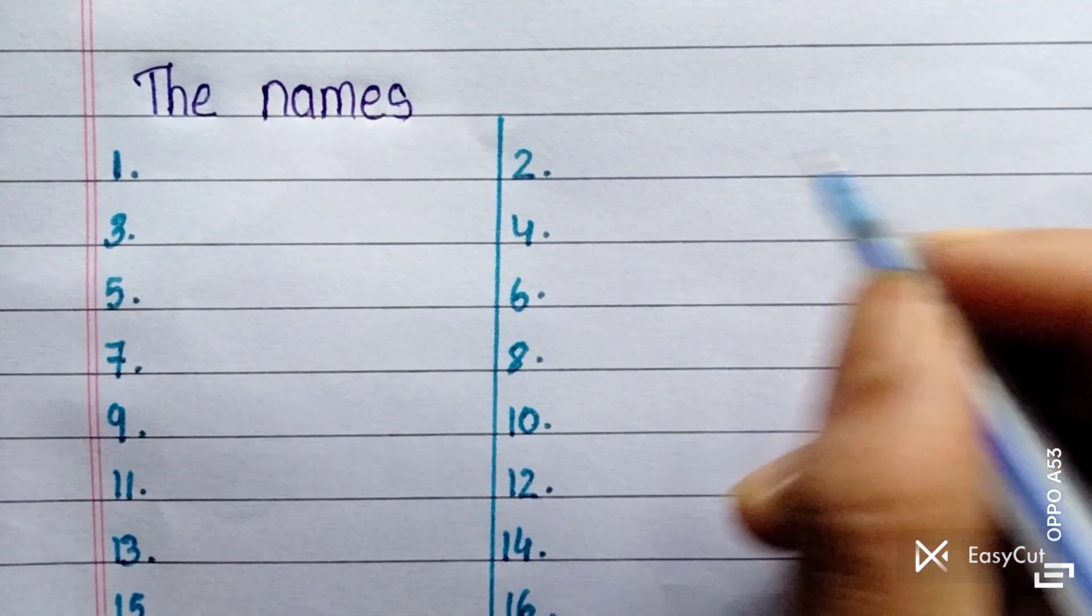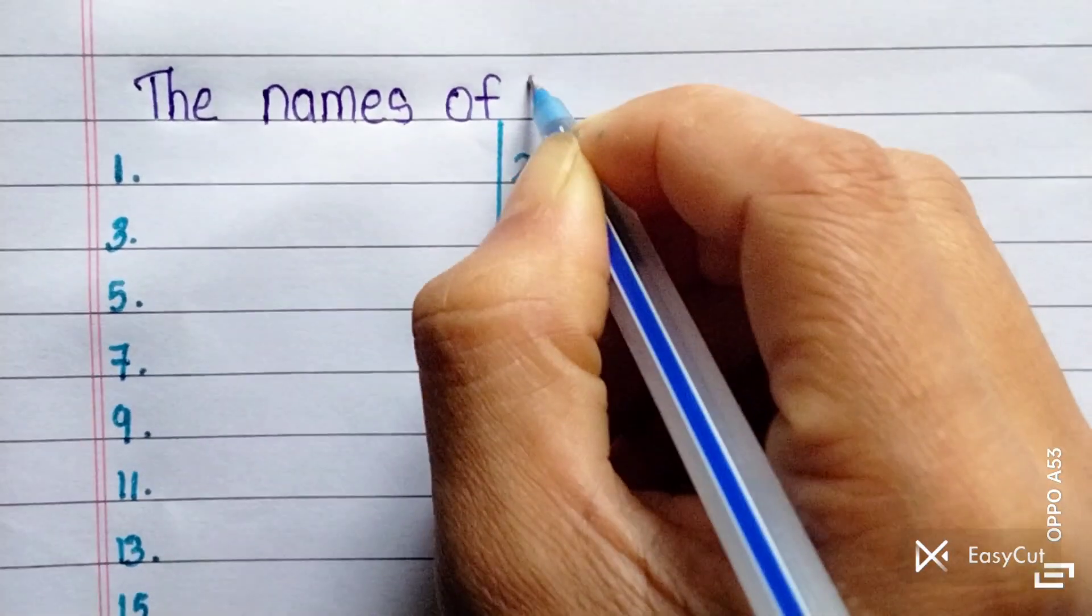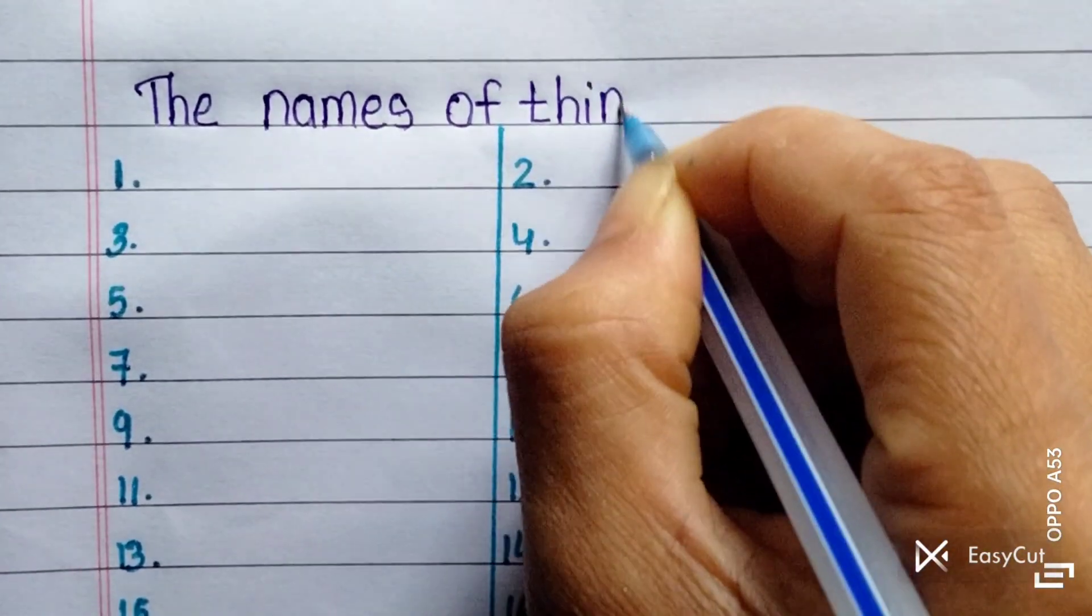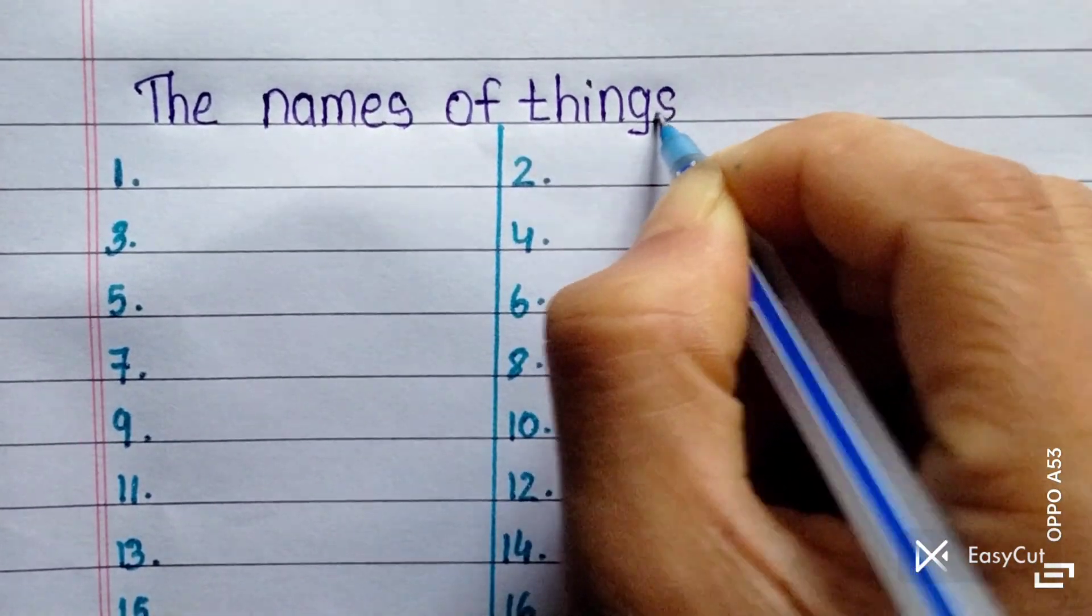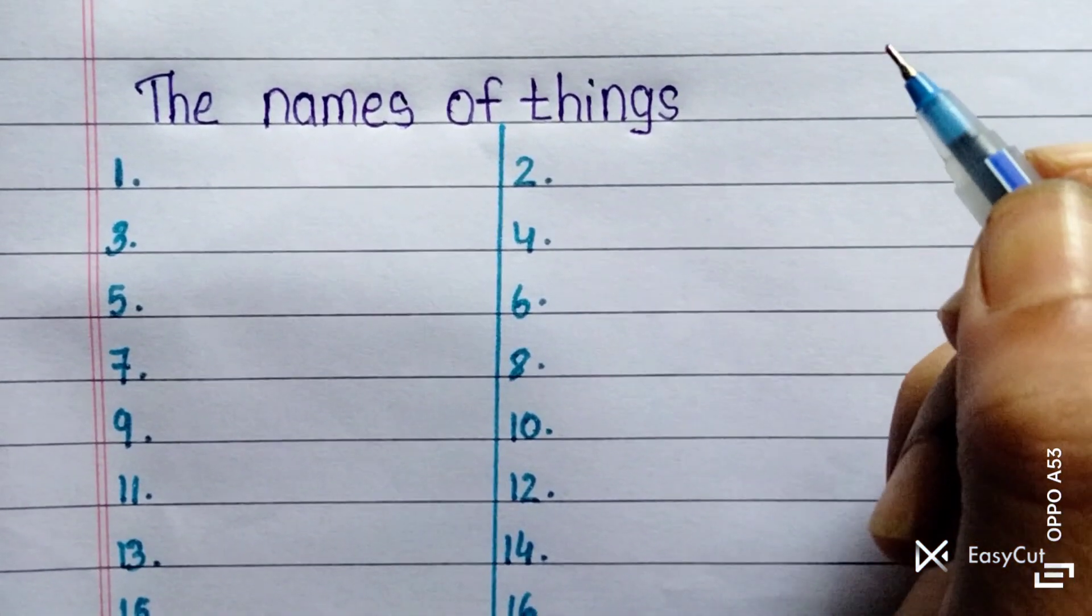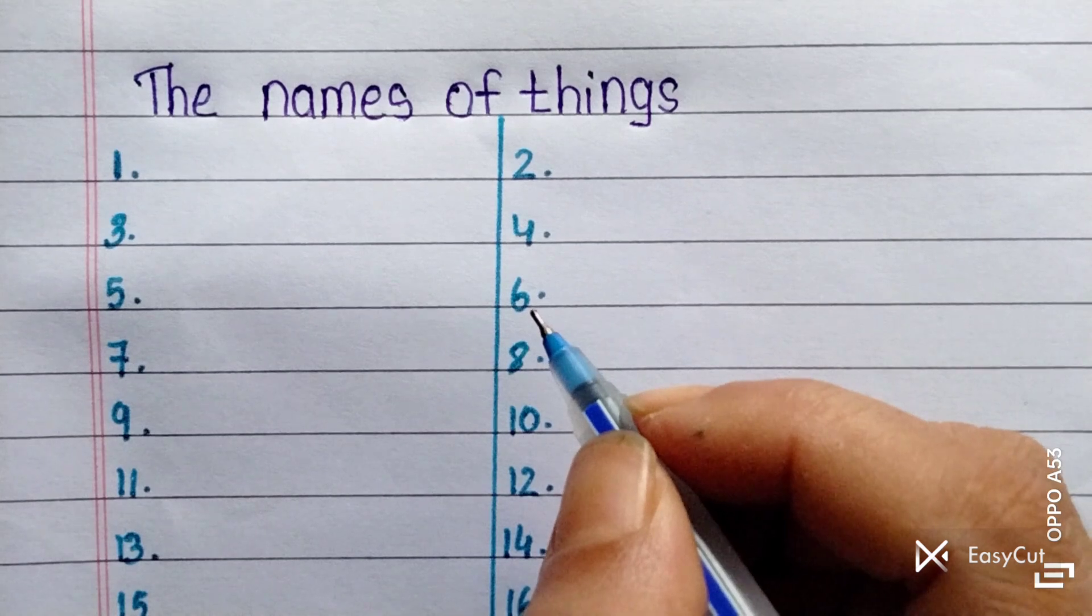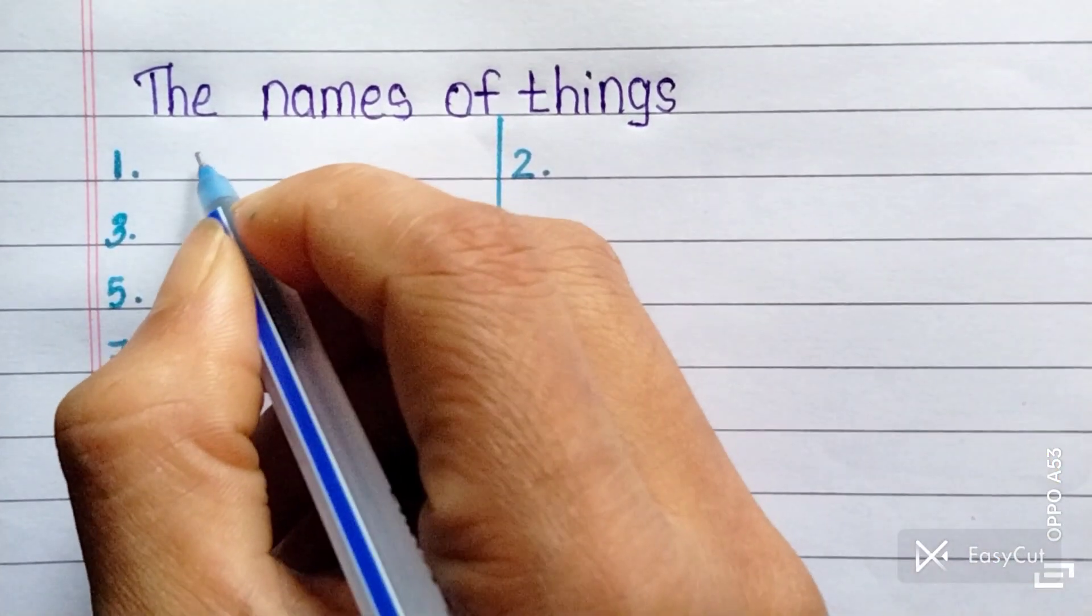Names of things. Let's get started. What are the names of things? First one is.